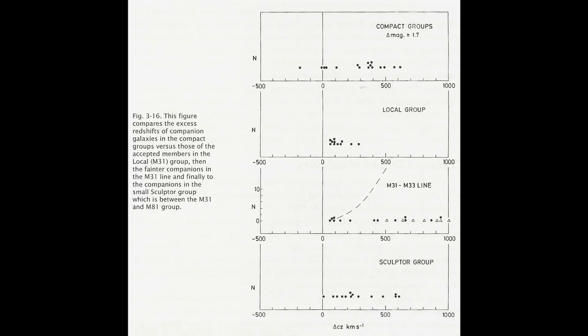When we examine our local group what is striking is that there are no redshifts above 300 km per second. And the reason for this is quite simple. Astronomers are just not willing to call any galaxy more than 300 km per second higher than M31 a member of our local group. Because of course that would mean that recessional velocity is not the only factor in redshift.